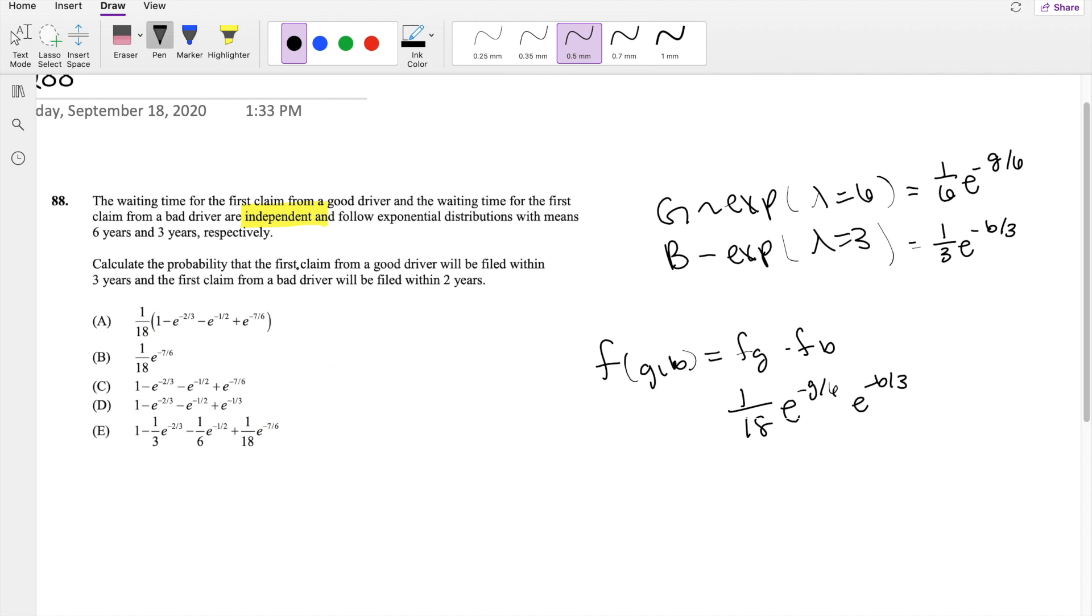And we're asked to find the probability that the good driver will file within 3 years and bad driver will file within 2 years. So if we're integrating with respect to good drivers, let's start that first. The upper limit is going to be 3.